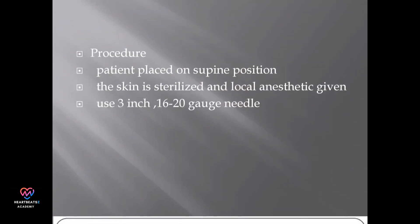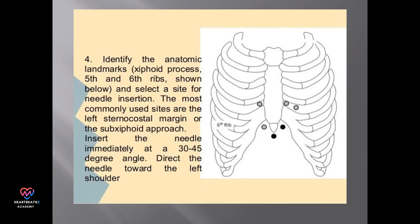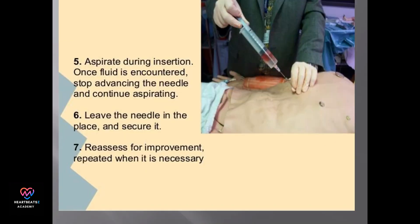The procedure starts with the patient in a supine position, skin sterilization, and local anesthetic administration. Identify anatomic landmarks like the xiphoid process and ribs for needle insertion. Insert the needle at a 30 to 45 degree angle, directing it toward the left shoulder.